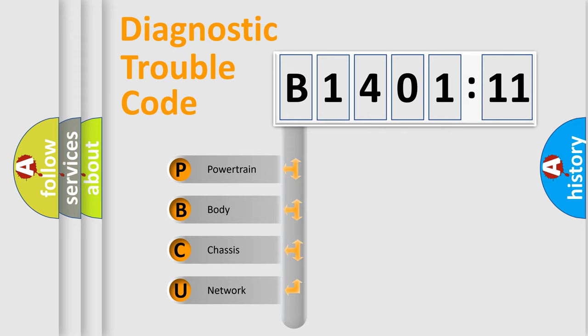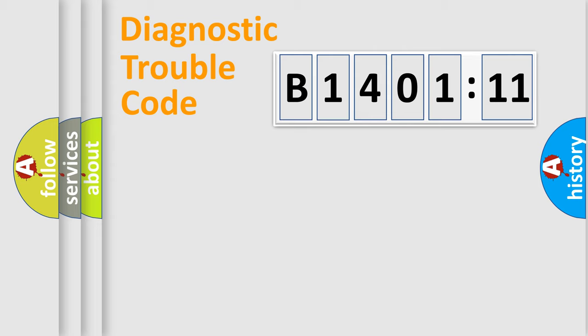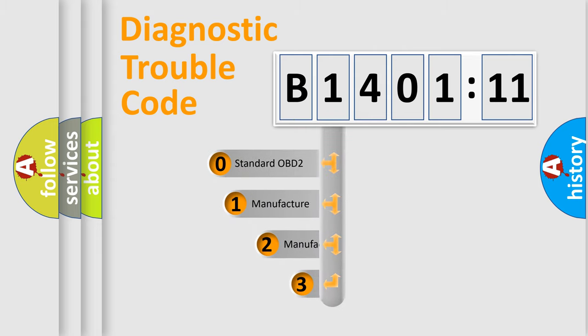We divide the electric system of automobiles into four basic units: powertrain, body, chassis, and network. This distribution is defined in the first character code.